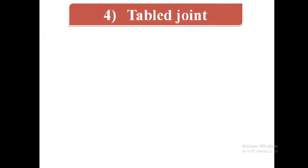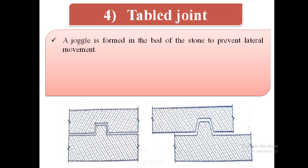Fourth type of joint is tabled joint. In this type of joint, a joggle is formed in the bed of the stone to prevent lateral movement. In this figure, we can see joggle is formed in the bed of stone.